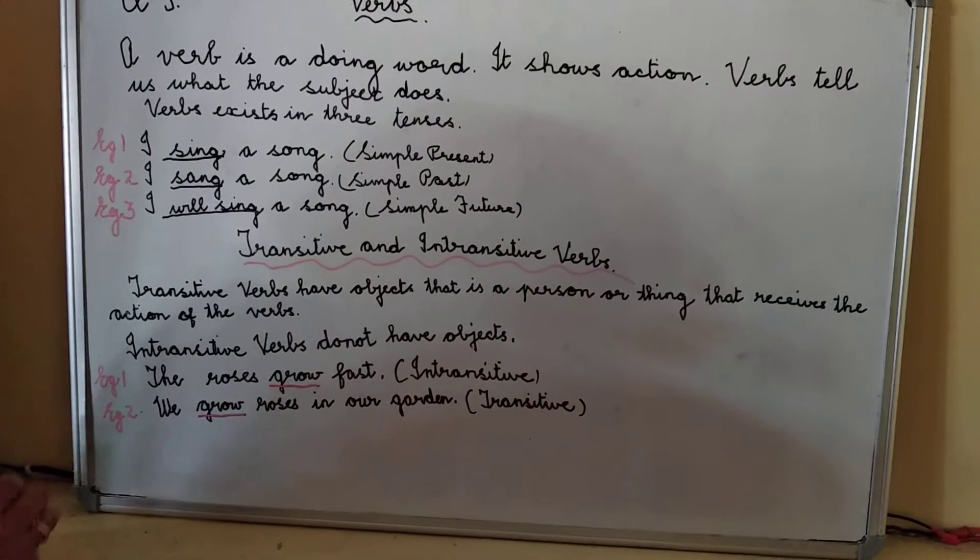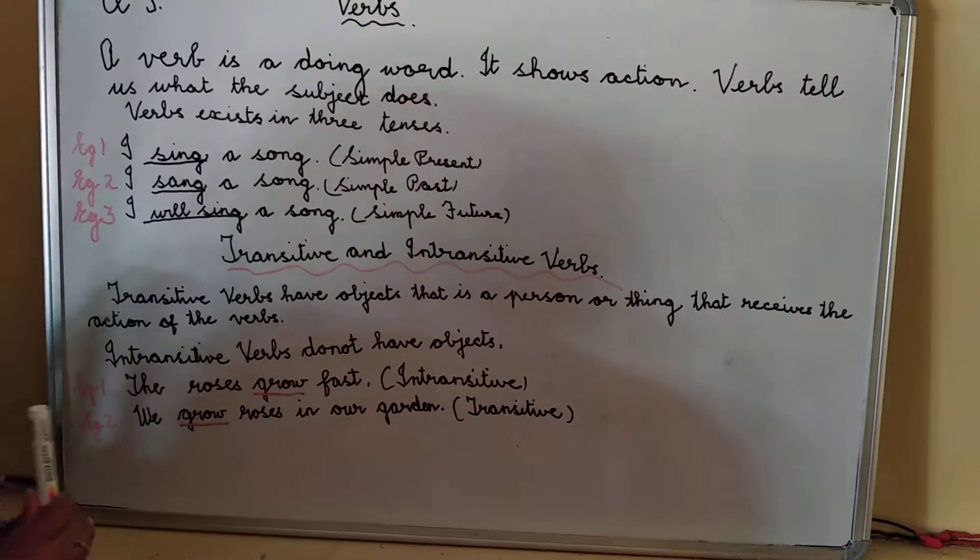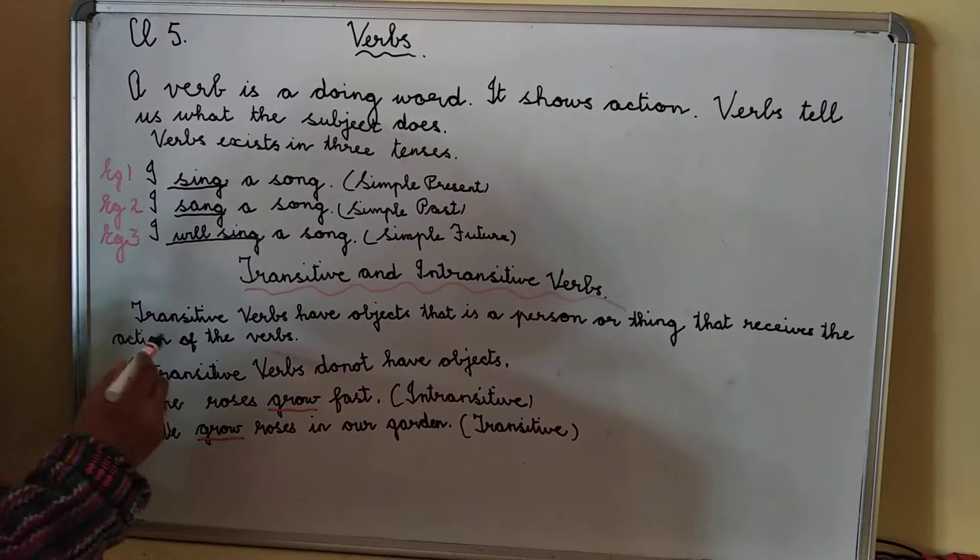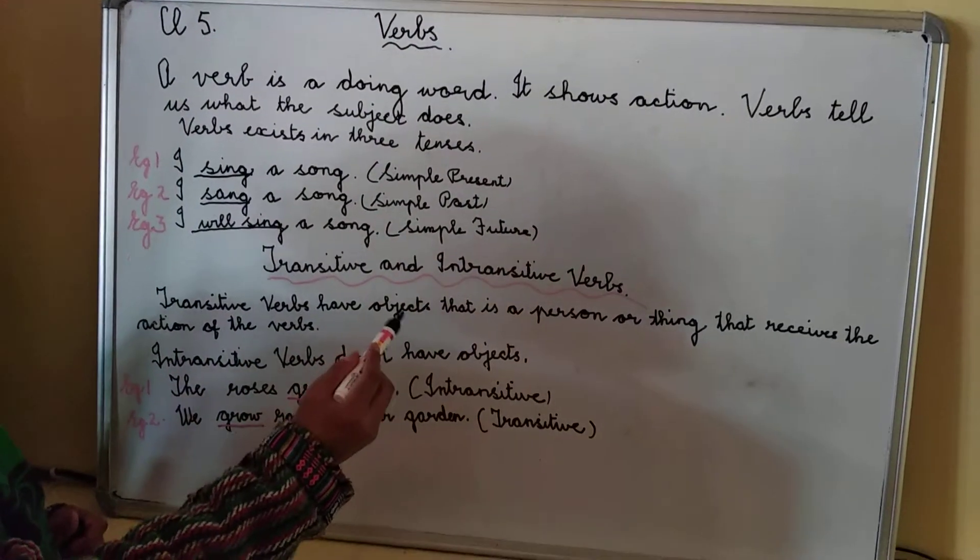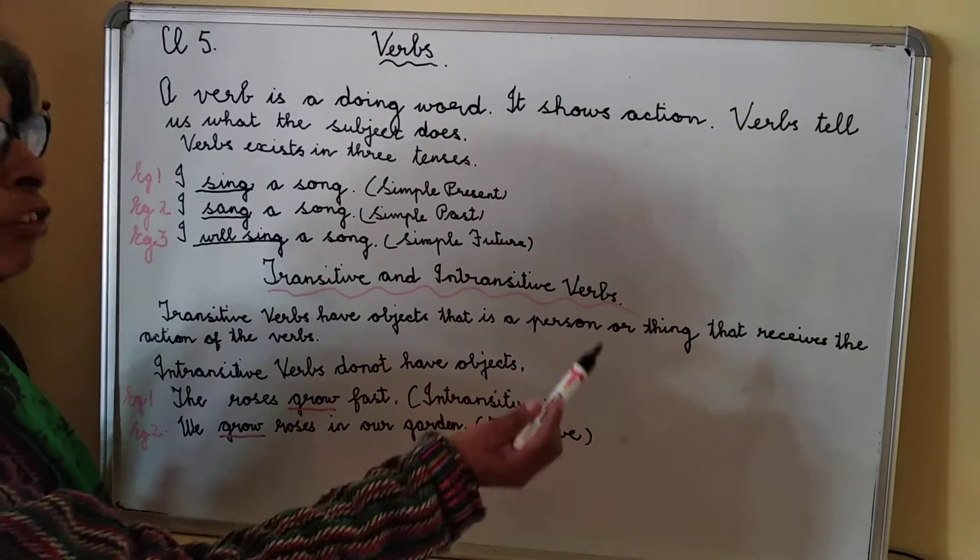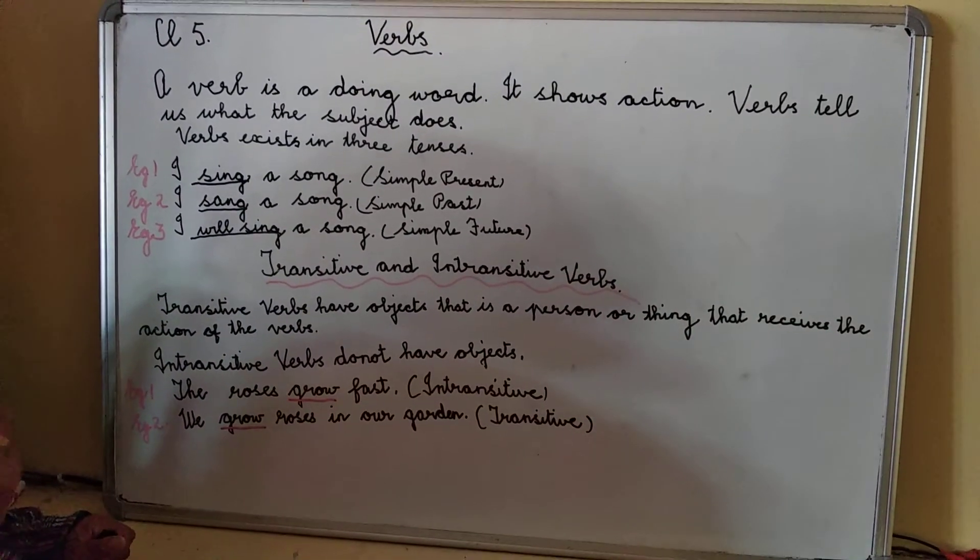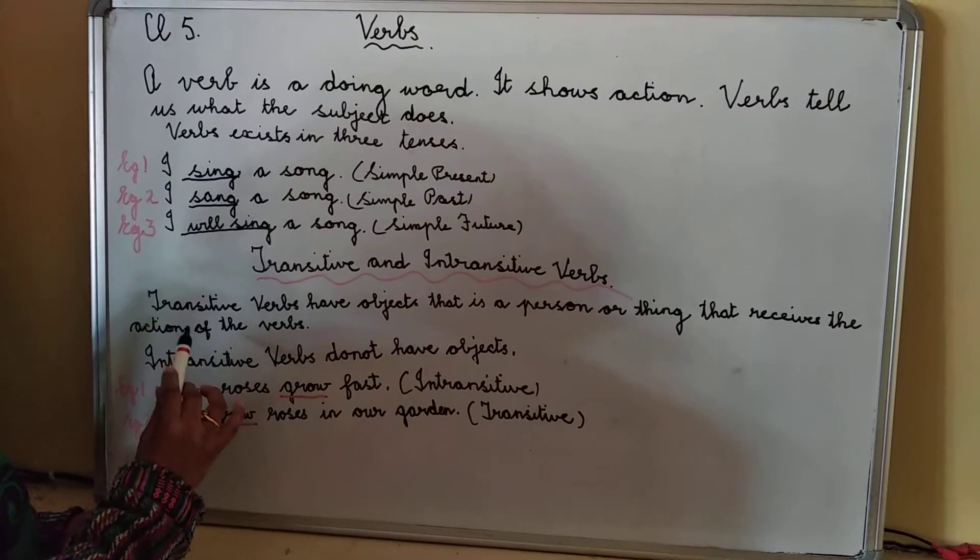Then we have transitive and intransitive verbs. What are transitive verbs? They are verbs that have objects. That is a person or a thing that receives the action of the verb. So that is a transitive verb.